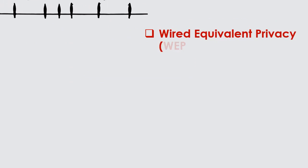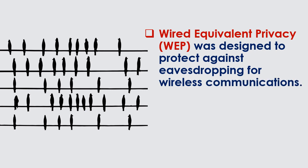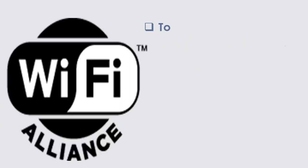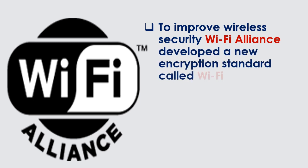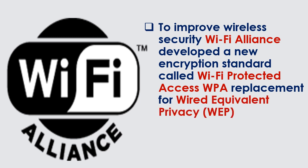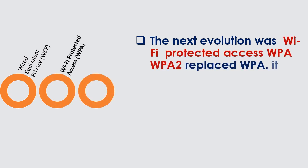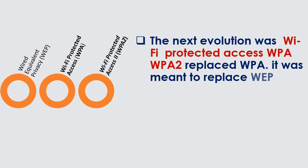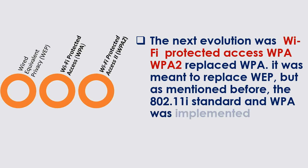Wired Equivalent Privacy, WEP, was designed to protect against eavesdropping for wireless communications. To improve wireless security, the Wi-Fi Alliance developed a new encryption standard called Wi-Fi Protected Access, WPA, as a replacement for WEP. The 802.11i standard and WPA were implemented independently.